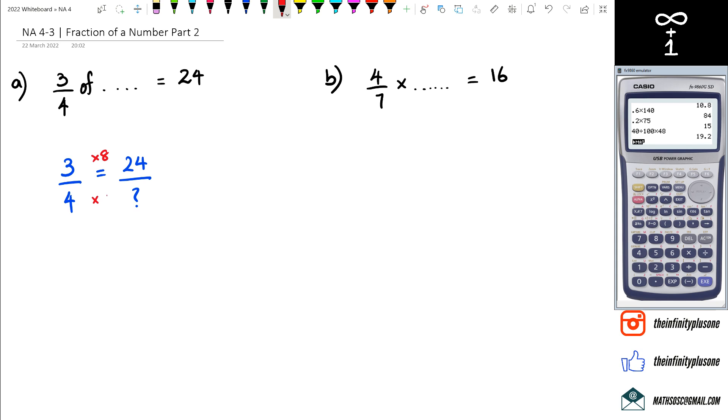If you look at the denominator, if it's an equivalent fraction we also have to multiply by 8. So 4 times 8 is going to be 32.